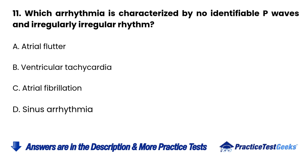11. Which arrhythmia is characterized by no identifiable P waves and an irregularly irregular rhythm? A. Atrial flutter. B. Ventricular tachycardia. C. Atrial fibrillation. D. Sinus arrhythmia.